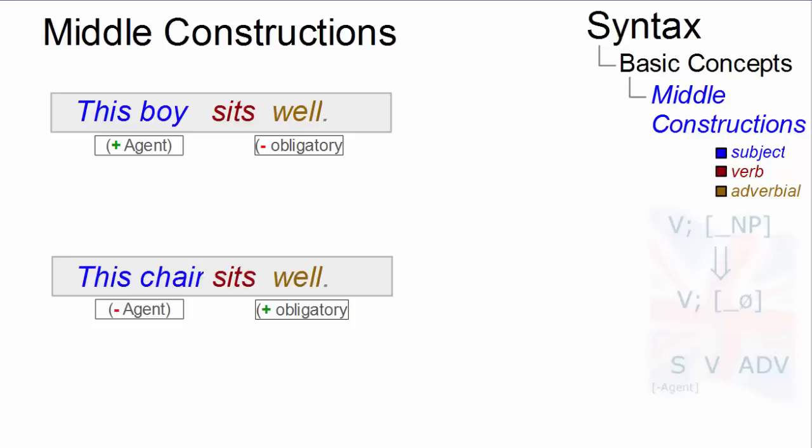In this chair sits well, we now have a non-agentive subject, the verb sit, and an obligatory adverbial. This chair sits would be ungrammatical.